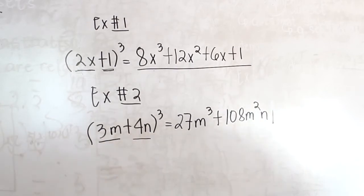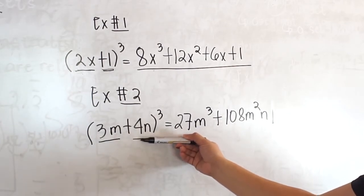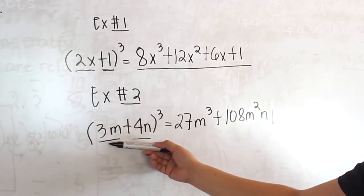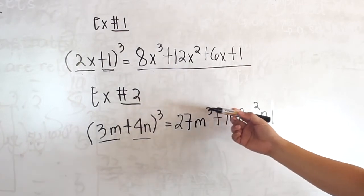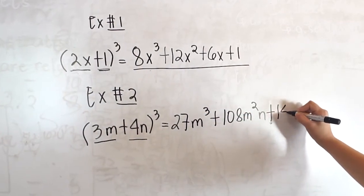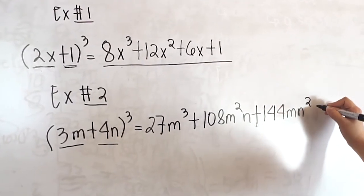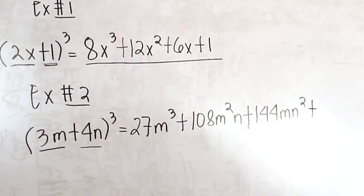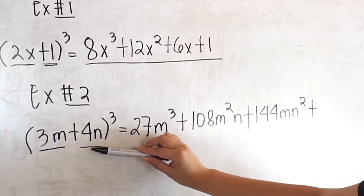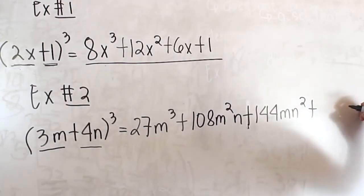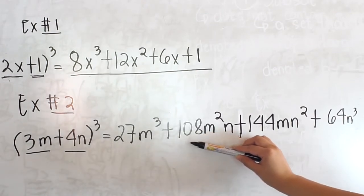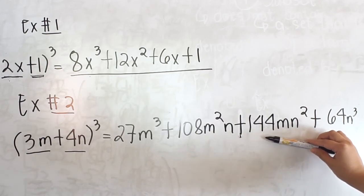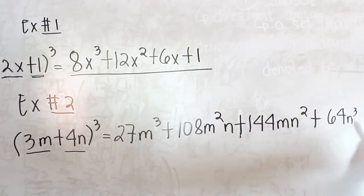Next, square the second term times the first term times 3. So 4n squared is 16n squared, times 3m is 48mn squared, times 3 is 144mn squared. Last but not least, cube the second term, which is 4n. So 4n cubed is 64n cubed. Our final answer is 27m cubed plus 108m squared n plus 144mn squared plus 64n cubed.